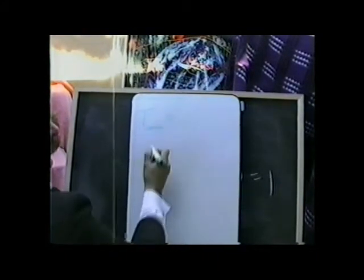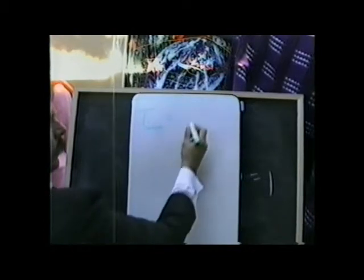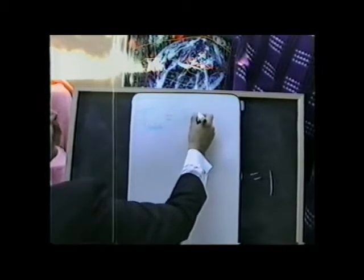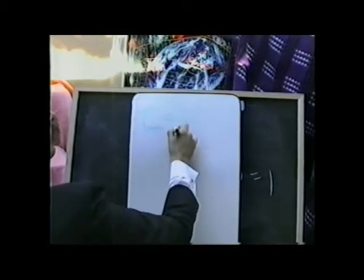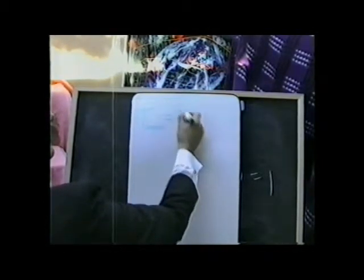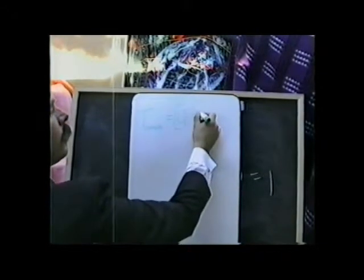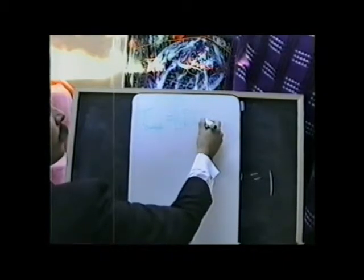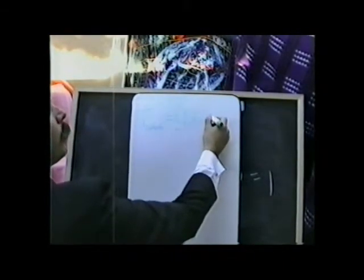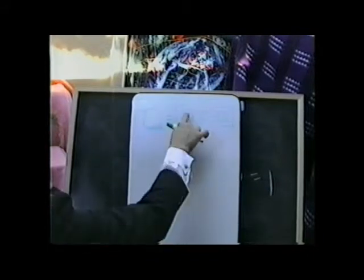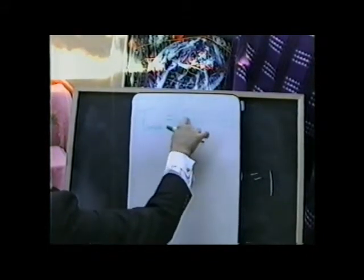This equals five ninths times, so we have our parentheses, times, we'll put our bracket there, the temperature that'll usually be given as Fahrenheit minus 32. This is a good equation because we have a fraction, we have a multiplication, we have an addition or a subtraction.